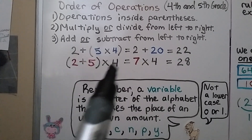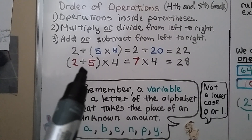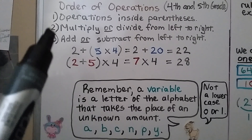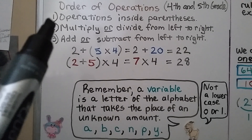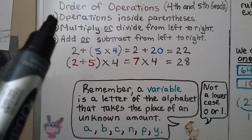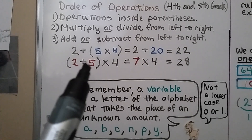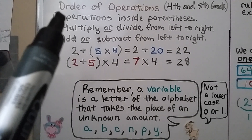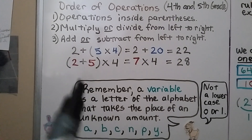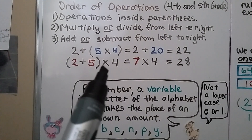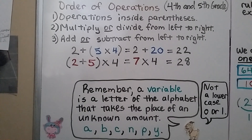With the same digits, if the 2 and 5 are in parentheses, even though multiplication is the second step, we must do inside parentheses first. So even though it's addition, it is inside parentheses. We do 2 plus 5, which equals 7, then multiply by 4. 7 times 4 equals 28.